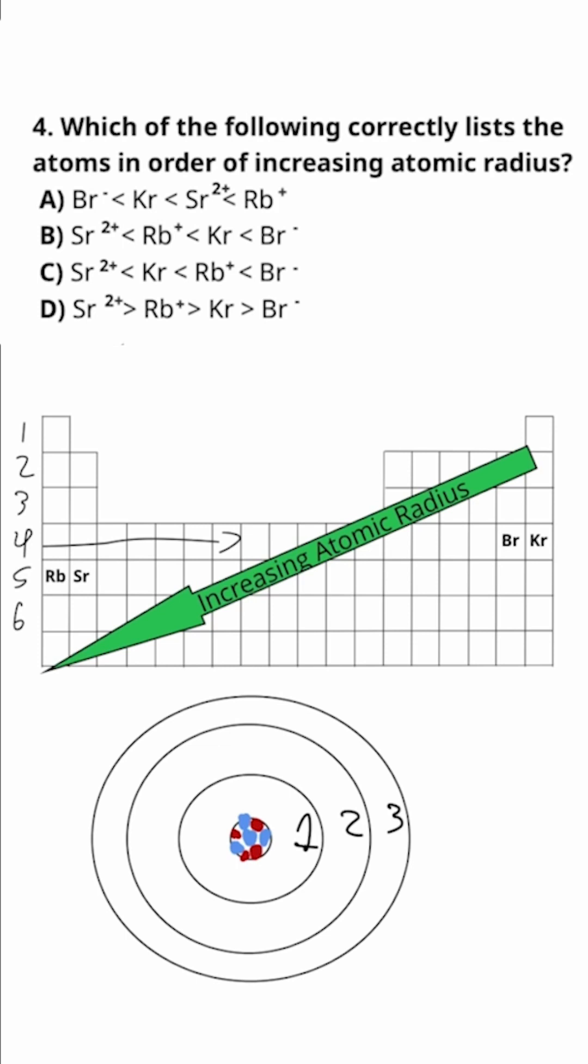But now let's look at why it decreases as we go to the right. Within each row on the periodic table, all of the atoms have valence electrons that are in the same energy level. So atoms in the fourth row have their valence electrons in the fourth energy level.